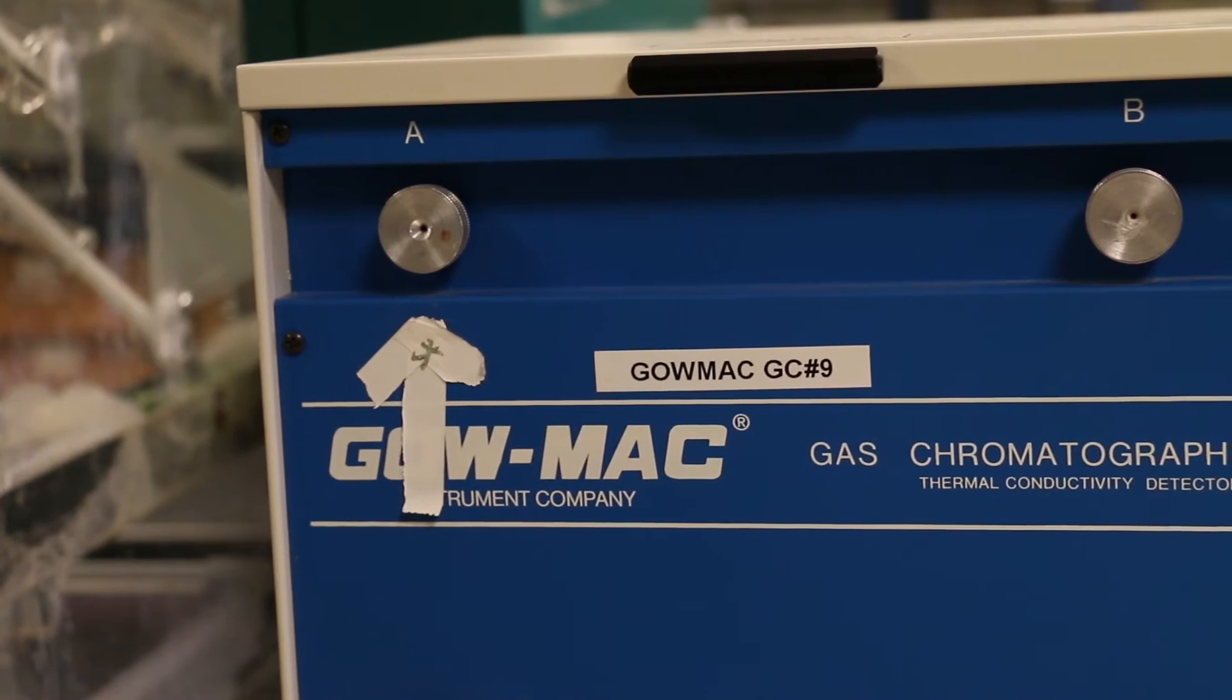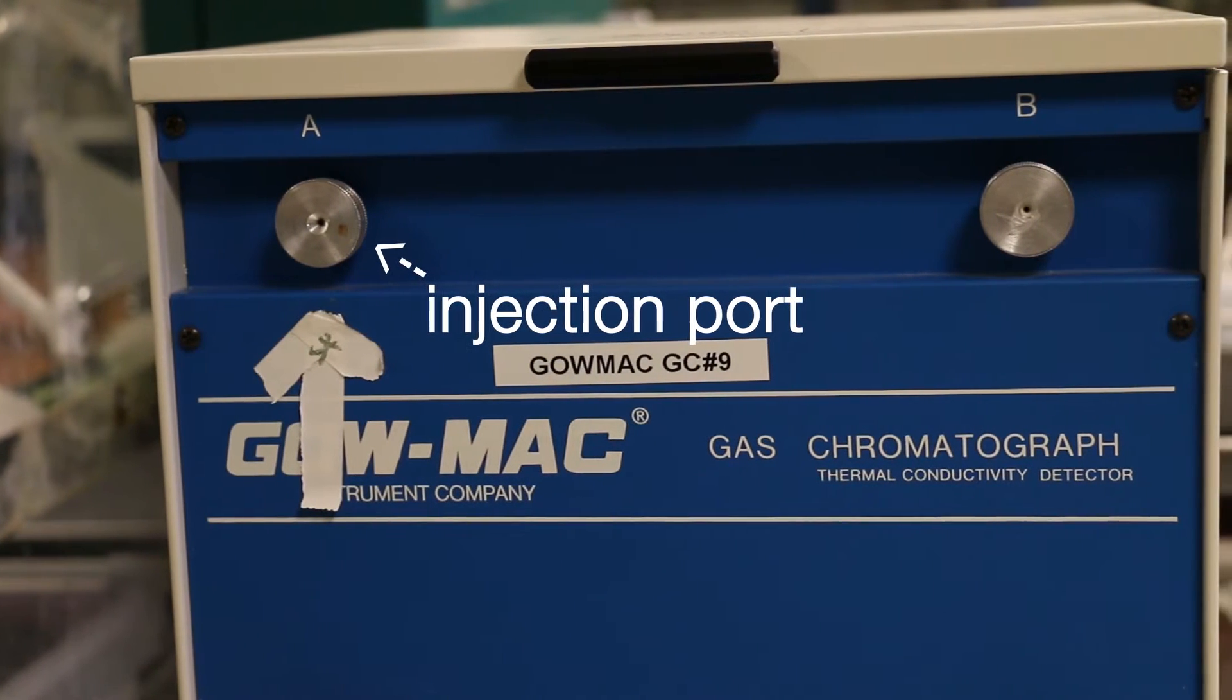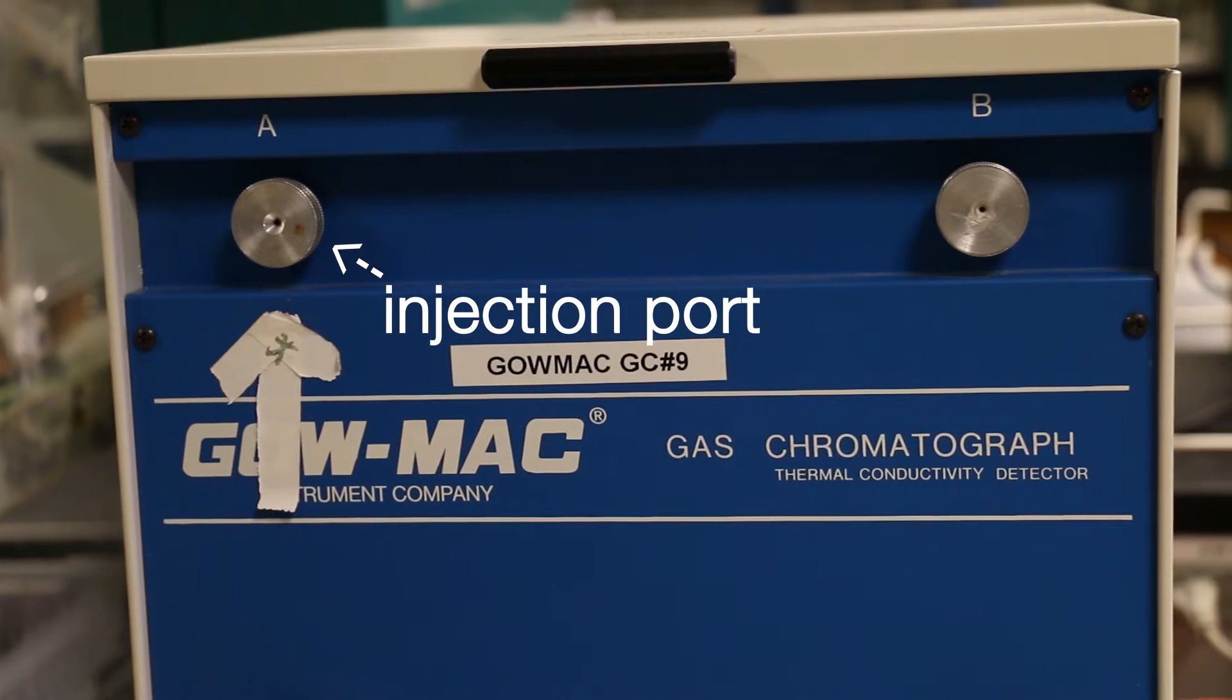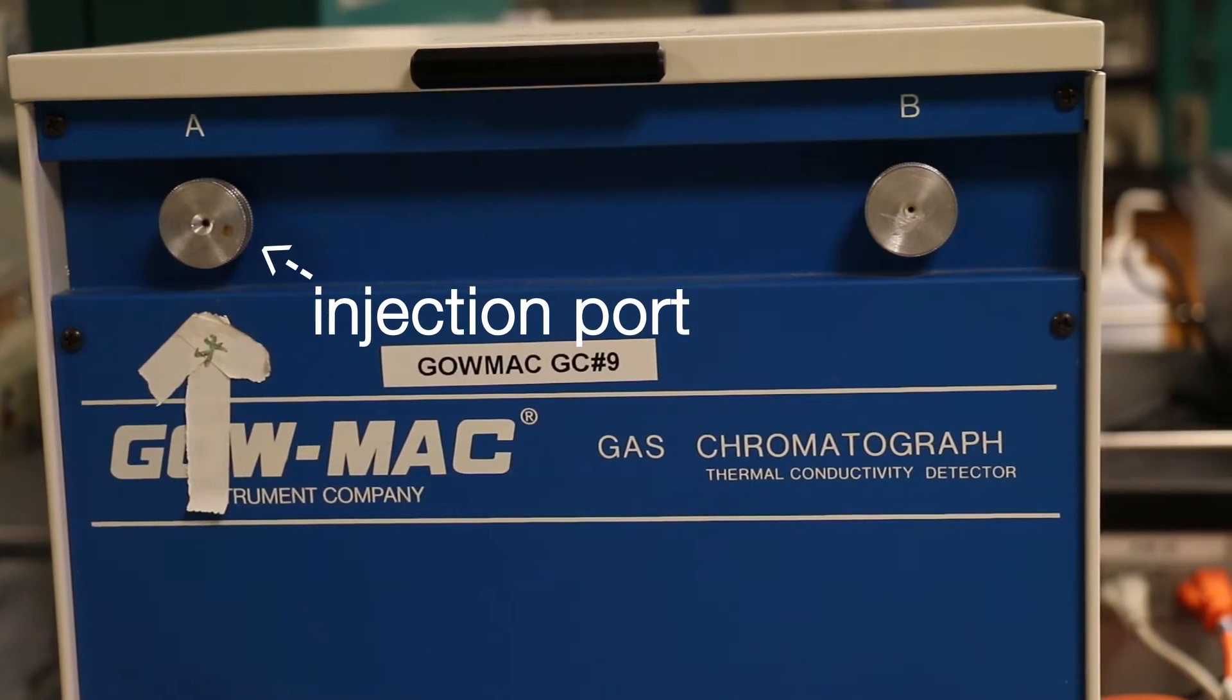The GC sample is injected onto the column through an injection port located on the front of the instrument. The injection port is heated to vaporize the mixture so be careful. Don't rest your hand on the port. It can be very hot.